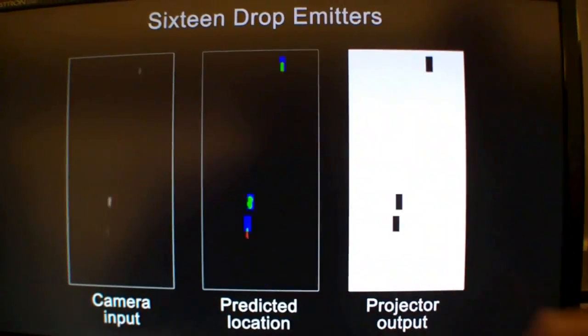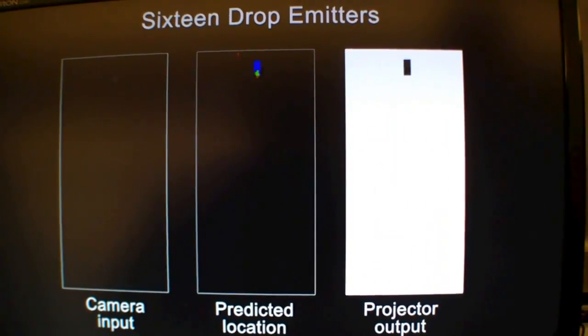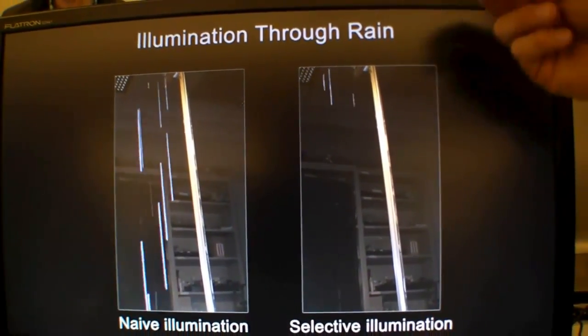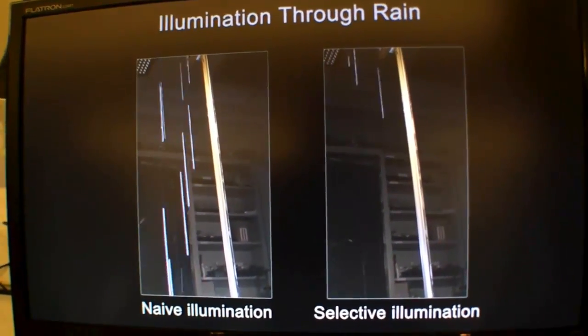It's constantly trying to adjust to accurately create this map and this mask of black dots that would eliminate the rain as it falls through there.